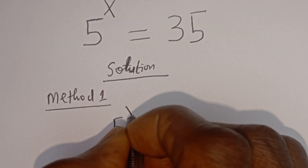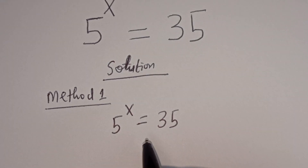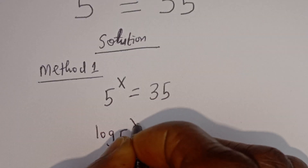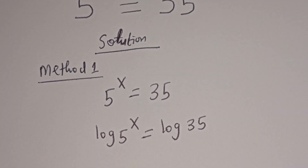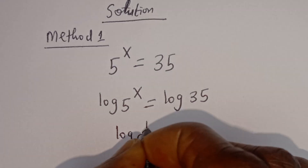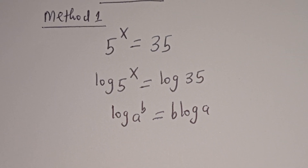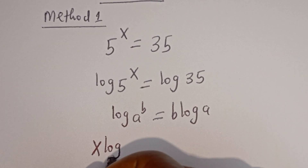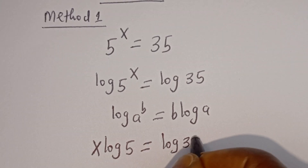5 to the power of X is equal to 35. Let's take the log of both sides. We have log of 5 to the power of X is equal to log 35. Then if you have log A to the power of B, this is equal to B log A.